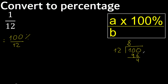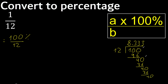Subtract. Next there is no number, therefore complete. Always complete with 0. Here, with point. 40: 12 multiplied by 3 is 36. Subtract. Complete.